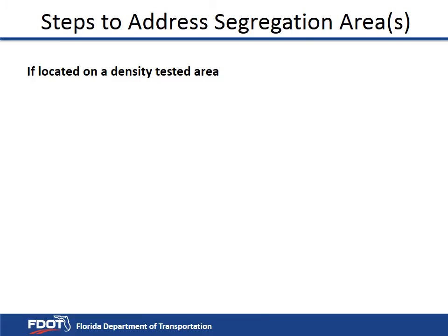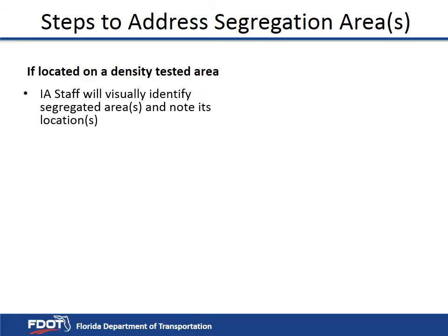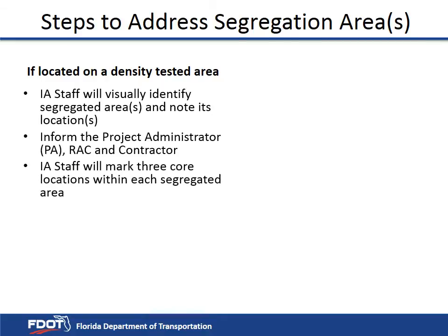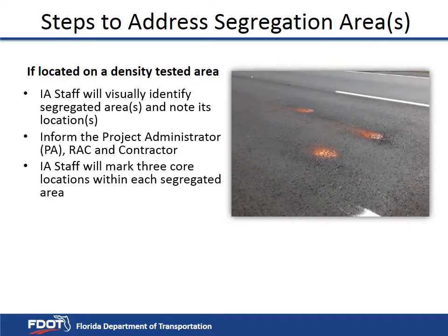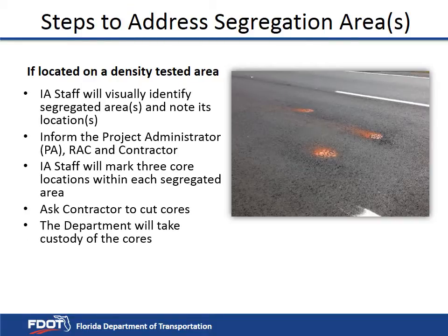The following are steps to address visually segregated areas. If the area is located on a density-tested area, first visually identify the limits of the segregated area. Inform the project administrator and the contractor. After discussion with the project administrator, the IA inspector will mark three core locations within each segregated area. Ask the contractor to cut cores; the department will take custody of the cores. The first location of the project can be documented as Location 1.